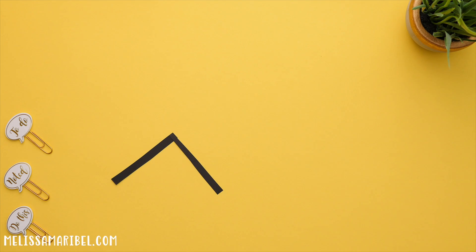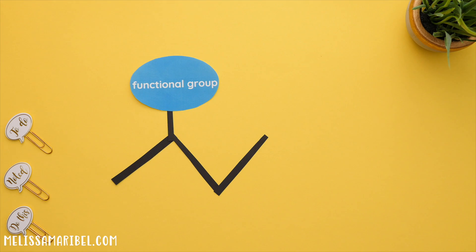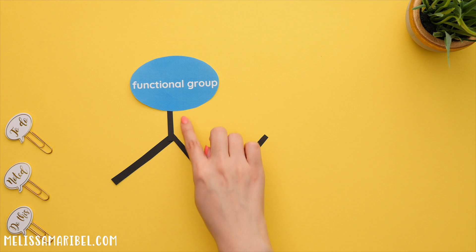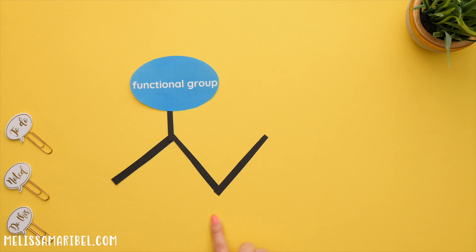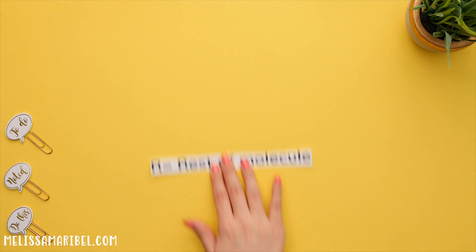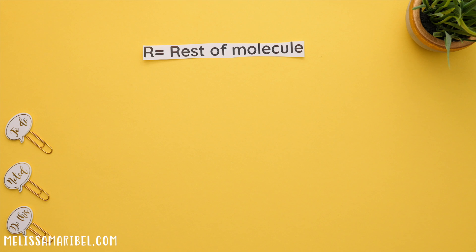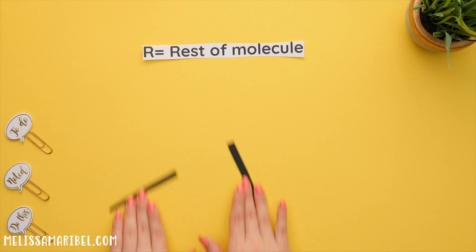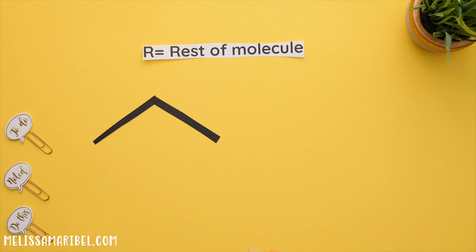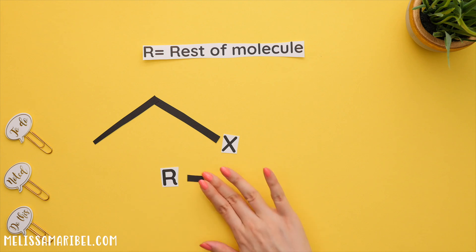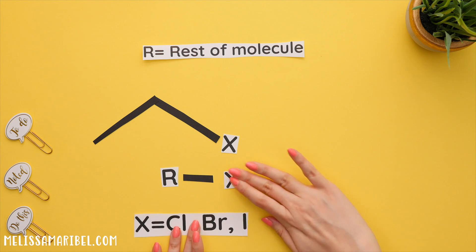A functional group is a specific type of substituent, meaning it is still attached to a carbon in the carbon chain. Before we go over all the common functional groups, it's important to know what an R group is. An R group stands for the rest of the molecule. Here's an example of a functional group — if we wanted to write this as a generic structural formula, this carbon chain would be the R group and the X stands for one of these halogens.